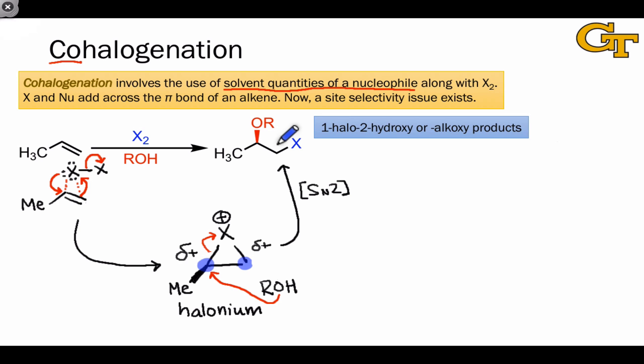When an alcohol or water is used as a nucleophile, we end up with one halo, two alkoxy or hydroxy products. And here again, because the SN2 ring opening proceeds with inversion of configuration, anti-addition is observed.